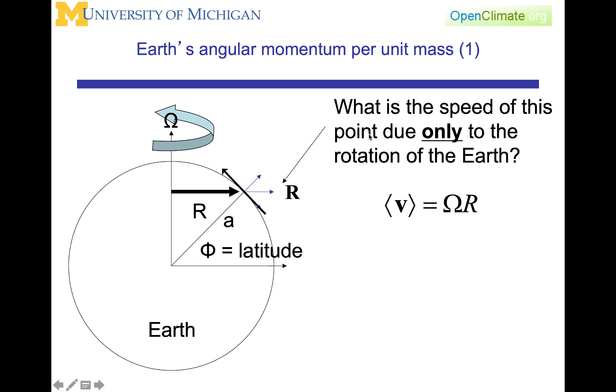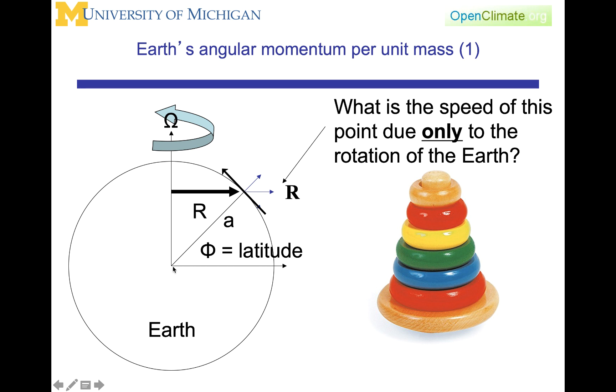Now we're going to ask the question, what is the speed of this point right there due only to the rotation of the Earth? The speed, the magnitude of the velocity, is going to be equal to omega, the rotational velocity of the Earth, times r, this vector here. You can see, depending upon which latitude we choose, if we choose a latitude down here, in our solid body rotation, the speed is going to be larger because r is larger. Omega will be the same everywhere, and this is completely analogous to the circle we looked at at the very beginning of this lecture.